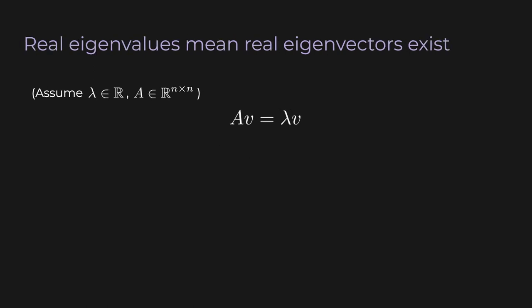Now we'll show that if a matrix has a real eigenvalue, then we can always find a real eigenvector associated with that eigenvalue. We'll start by assuming lambda is real and A is a real square matrix. Once again, Av equals lambda v. Conjugate both sides, distribute the conjugation — A is real, and this time lambda is also real, so we get the conjugate of v satisfies A times the conjugate of v equals lambda times the conjugate of v.